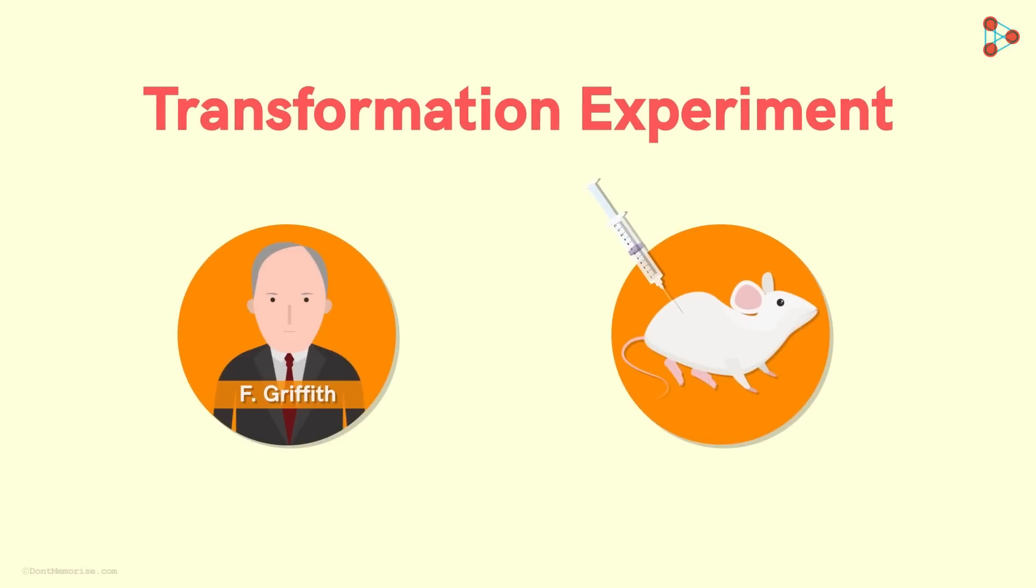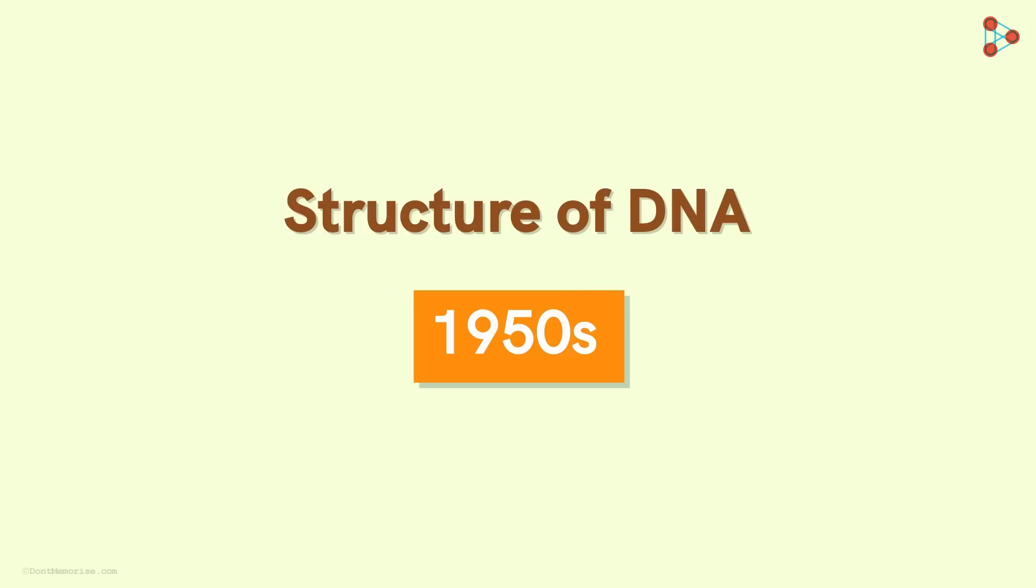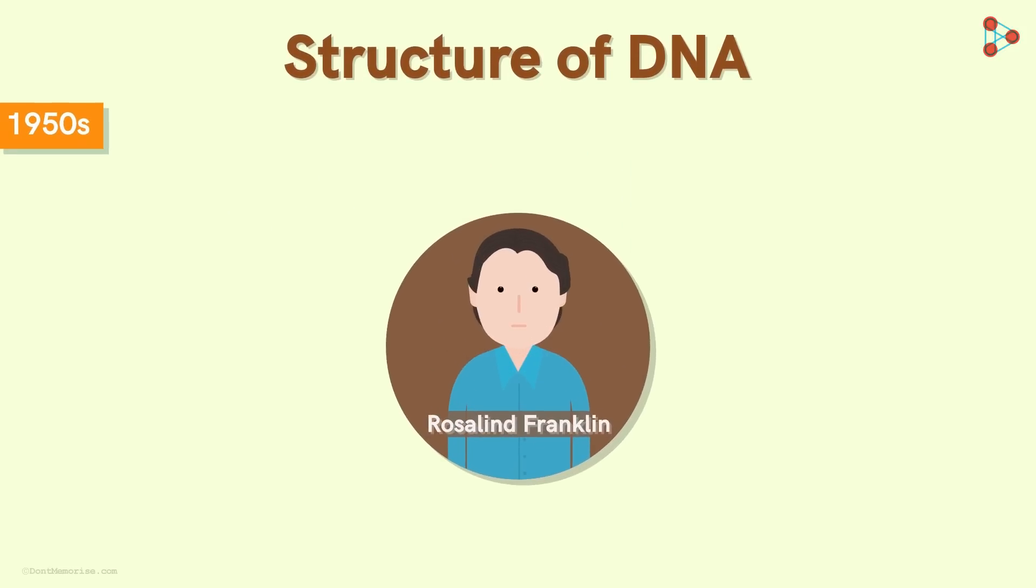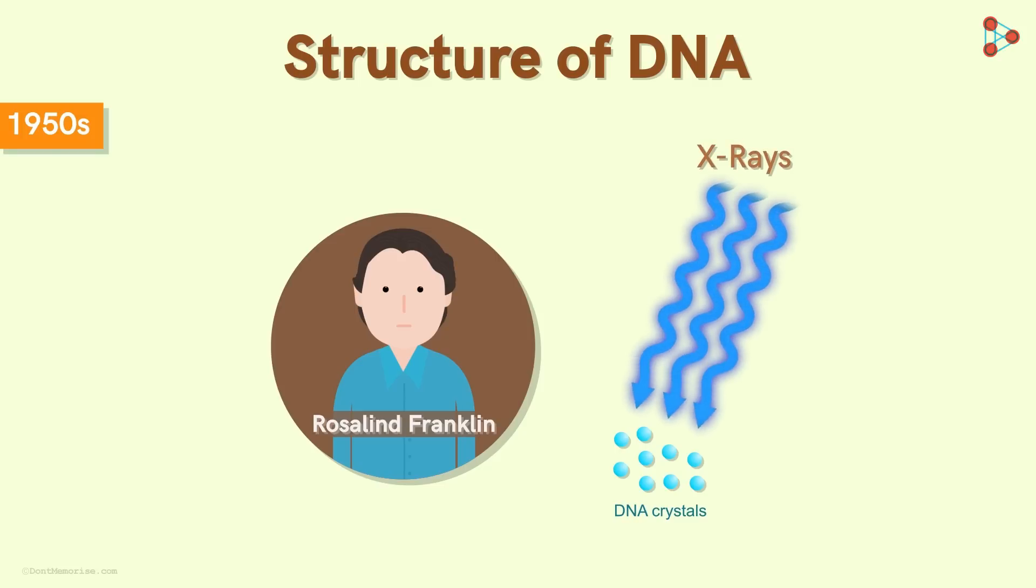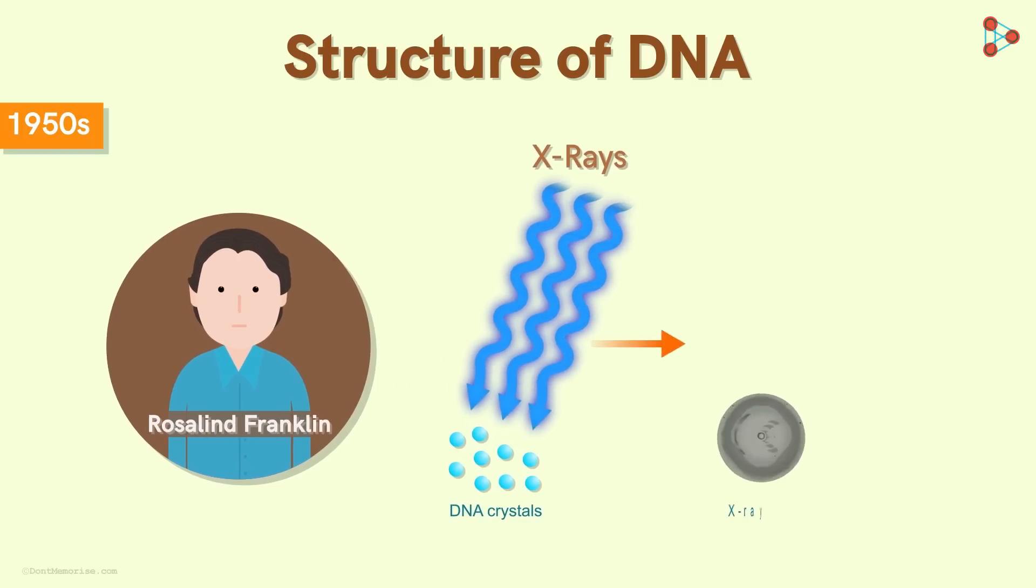However, post Griffith's transformation experiment, the other two notable works in the timeline helped shift the focus towards DNA. So around the early years of 1950s, an English chemist named Rosalind Franklin started working on DNA molecules. She isolated the DNA crystals and shone X-rays on them. As a result, she obtained fine images of the structure of the DNA molecules.